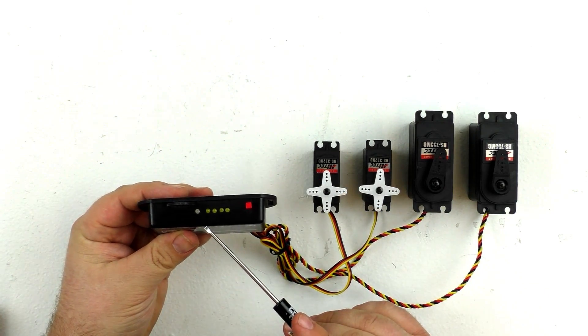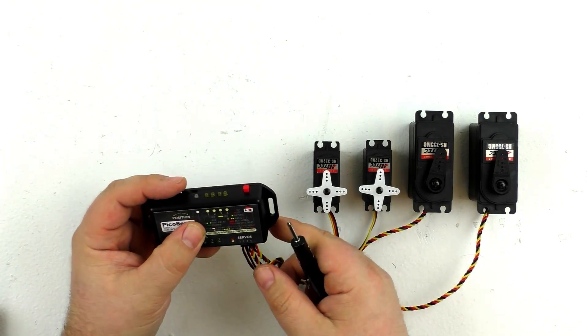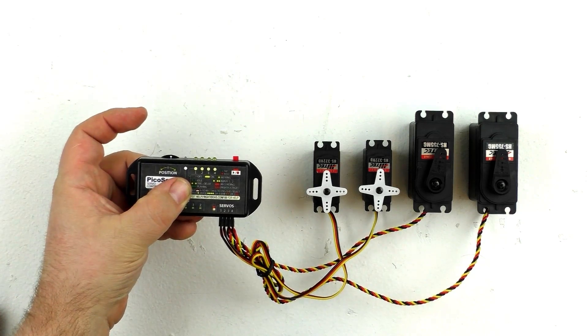On the top are the LEDs for status indication, this is the record and play button, and this wheel is what will allow you to actually program the motion of the servos.